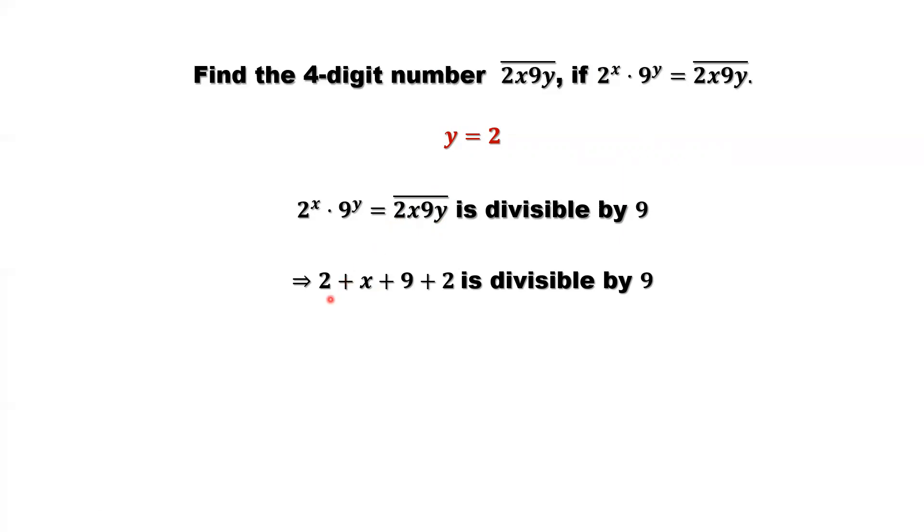If a number is divisible by 9, the sum of all its digits is also divisible by 9. This implies 2 plus x plus 9 plus y. y we already derived, y is 2. It is divisible by 9. Simplify this part. It is equal to 13 plus x. 13 plus x is divisible by 9. x is in between 0 and 9.